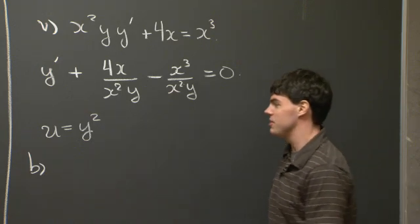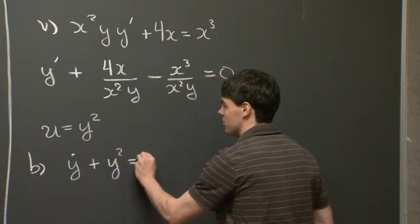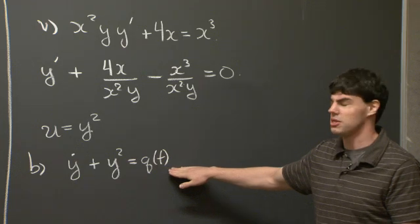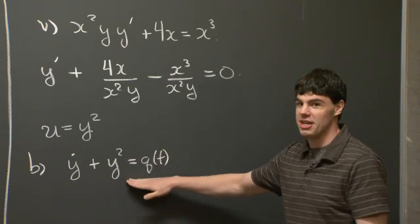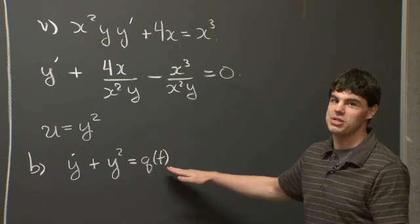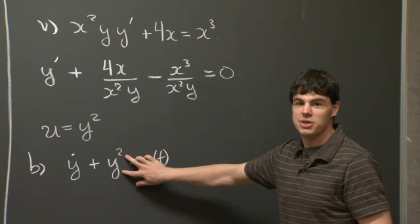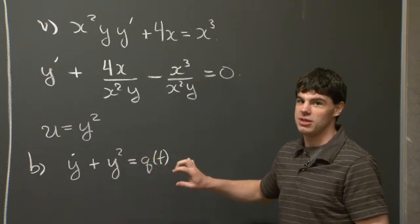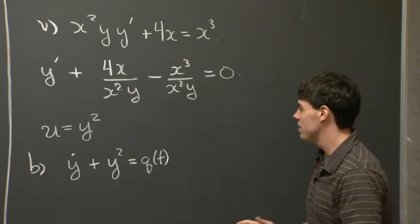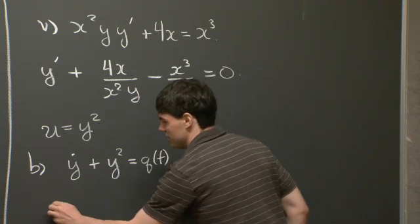For part b, we are given the differential equation y-dot plus y-squared equals q of t, and we want to show that this equation does not satisfy the superposition principle. Note that this equation is not linear, and we know that linear equations satisfy the superposition principle. So we need to exploit the nonlinearity to make it fail the superposition principle. As an example, we can pick a couple of right-hand sides q.